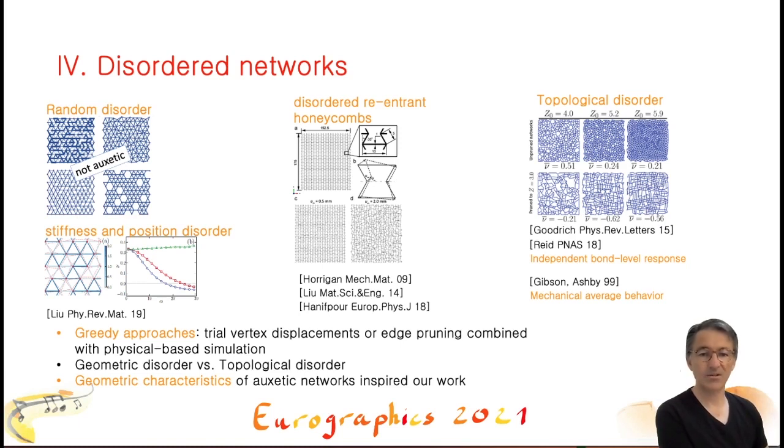The works cited in this slide all focus on producing auxetic networks. Starting with an initial regular triangulation, Liu introduces disorder either by modifying the stiffnesses of the edges, by displacing the vertices, or by removing edges or vertices. While none of the four methods alone are sufficient to reach auxeticity, Liu showed that a combination of vertex displacement and stiffness modification was able to produce slightly auxetic networks. Other authors start from an already auxetic structure and displace the vertices. These approaches preserve the structural topology, the connectivity is unchanged, and the order of the vertices remain either 6 or 3.